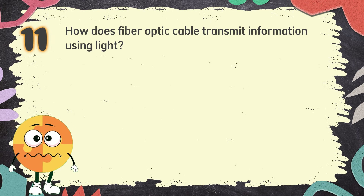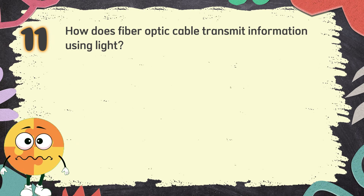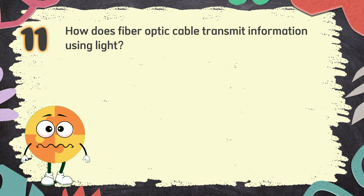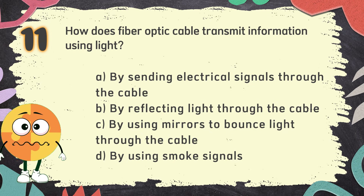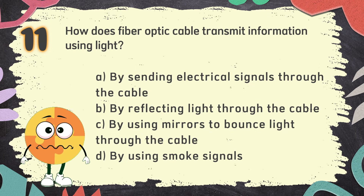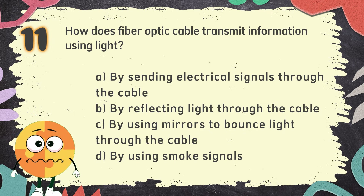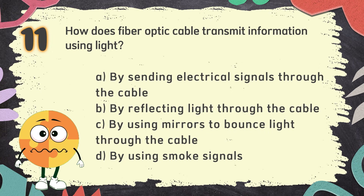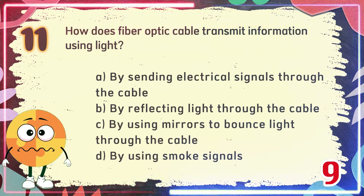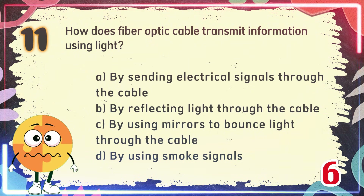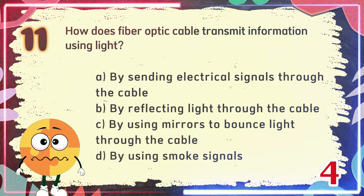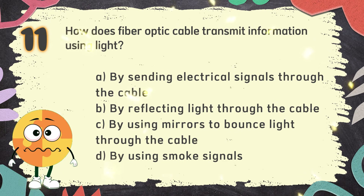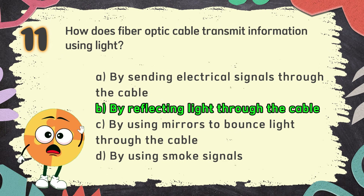Number 11. How does fiber optic cable transmit information using light? The choices are: A. By sending electrical signals through the cable, B. By reflecting light through the cable, C. By using mirrors to bounce light through the cable, D. By using smoke signals. The correct answer is B: By reflecting light through the cable.